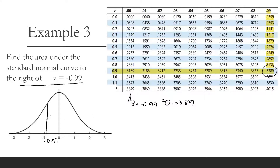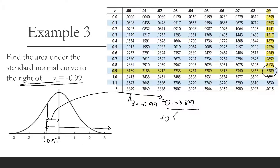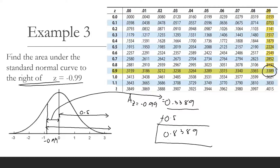Since we are looking for the area to the right, we are going to add 0.5 — the area to the right of the mean. So this area (0.3389) plus 0.5 is equal to 0.8389. So the area to the right of z equals negative 0.99 is 0.8389.